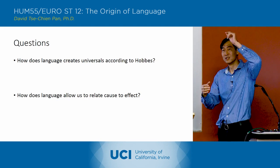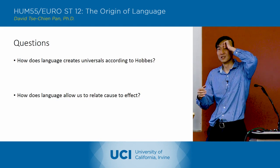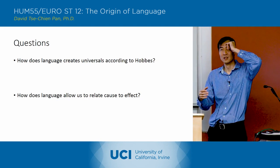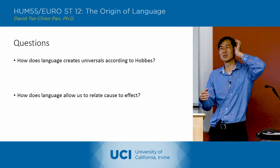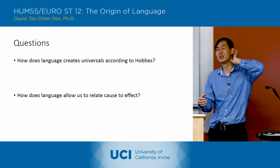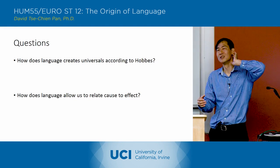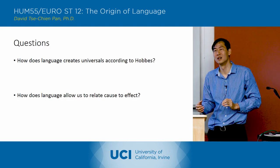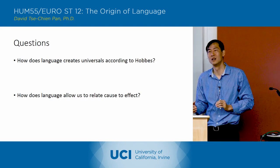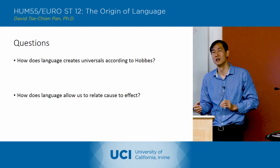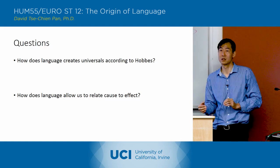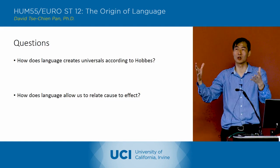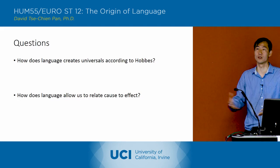Common names designate universals, so a common name can have a certain attribute and many things can fall under that attribute. So a common name contains a whole category of things.